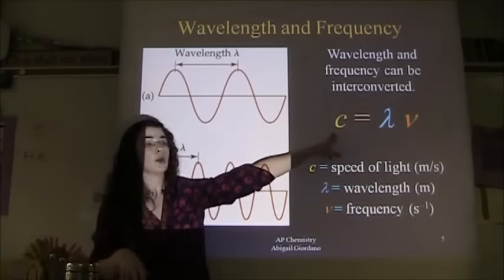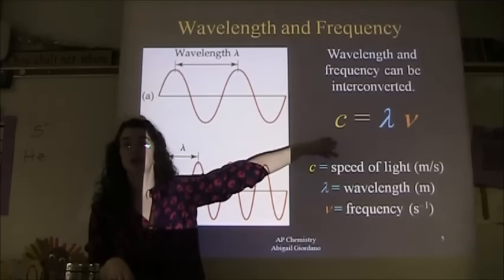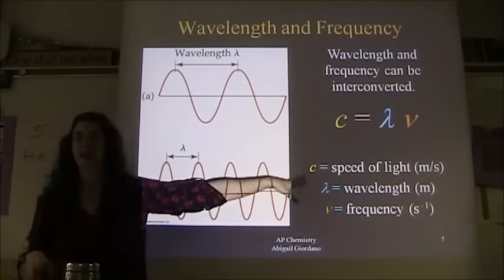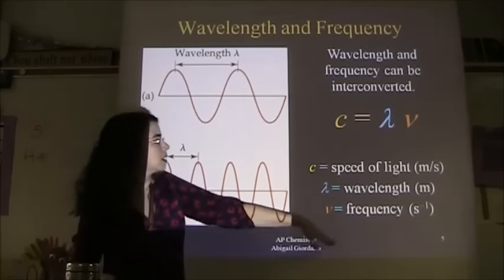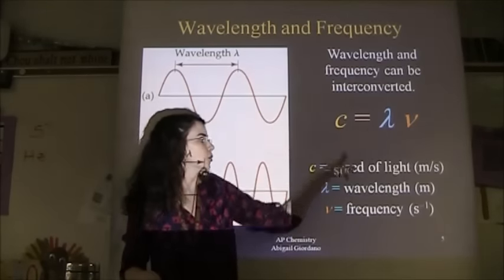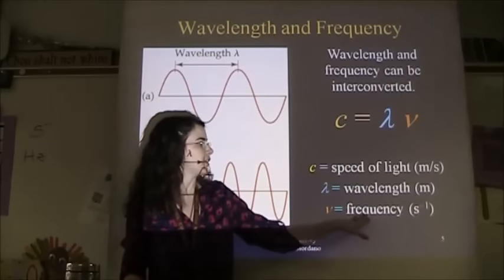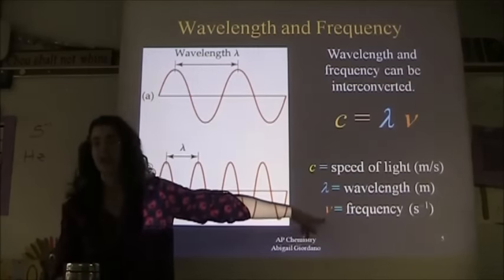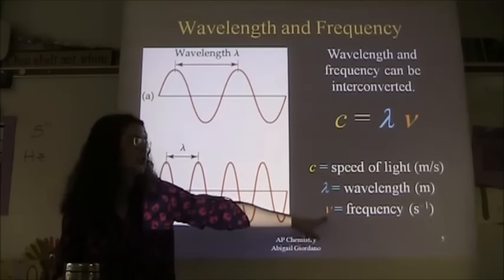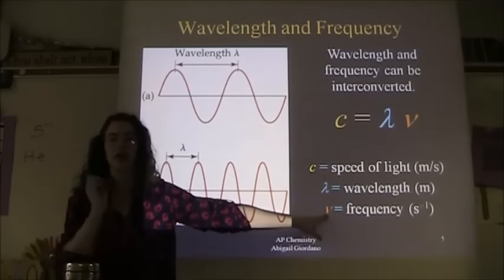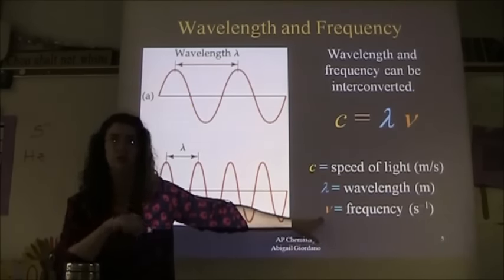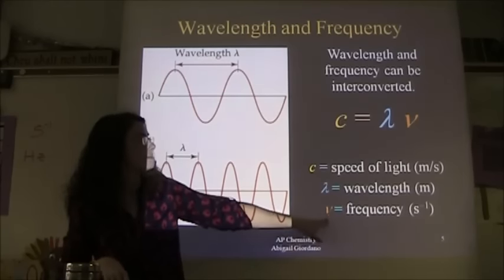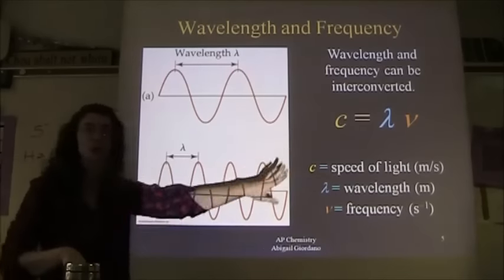The equation c = λν is on your equation sheet. Here, c is the speed of light (a constant given to you), lambda (λ) is your wavelength in meters, and nu (ν) is frequency in inverse seconds. Note that nu looks like a 'v' but it is a lowercase Greek letter nu, not a v.